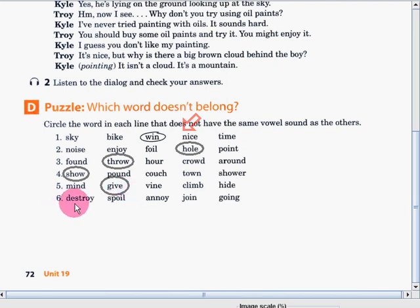Next: destroy, spoil, annoy, join, and going. Very good. The word is going. Going doesn't have OI sound.